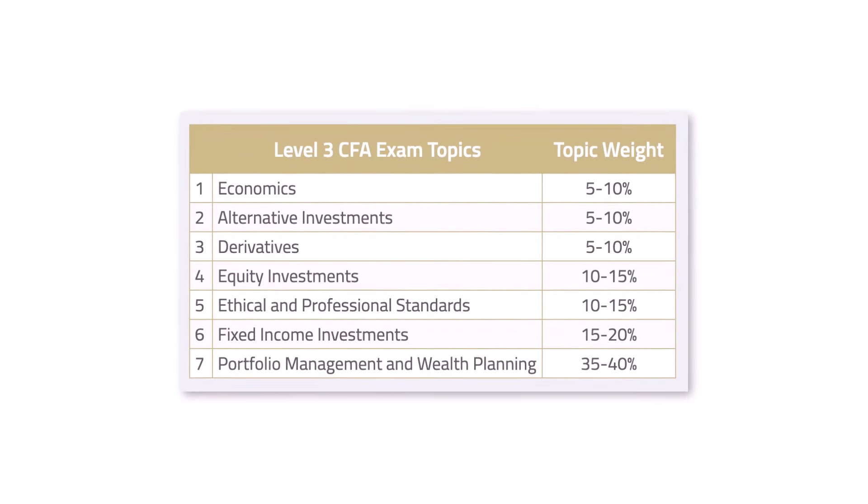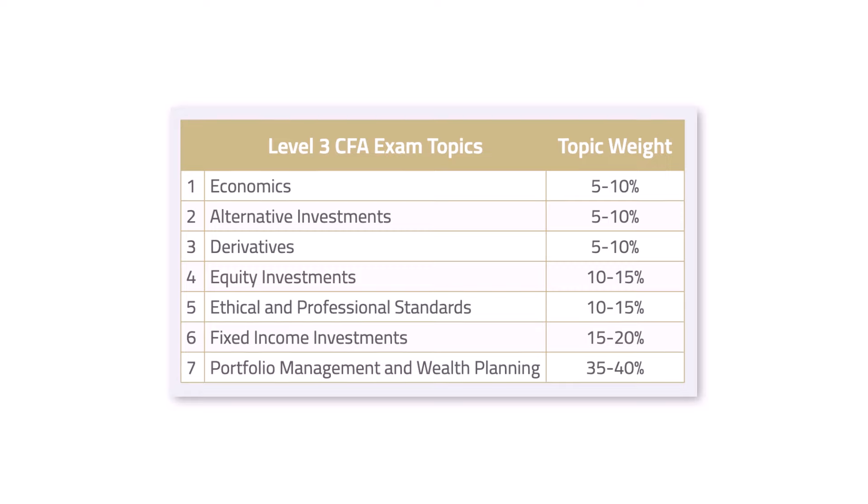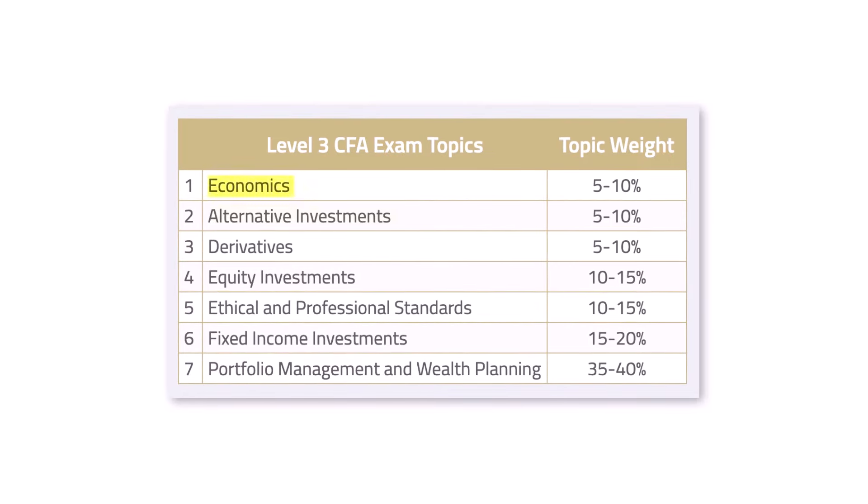In terms of topics, you now have 7 as opposed to 10 at Levels 1 and 2. You no longer have quant, FRA, or corporate finance. You're left with econ, alternative investments, derivatives, equity, ethics, fixed income, and portfolio management. Within portfolio management, you have six sub-modules.